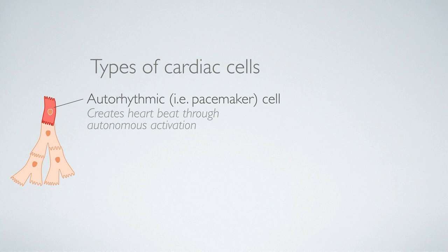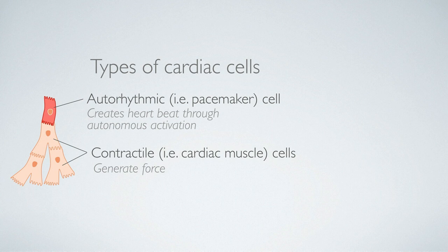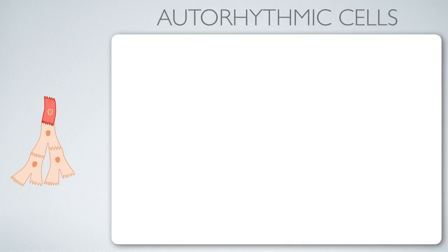The action potentials generated by the auto-rhythmic cells then propagate through the contractile cells, which, in addition to propagating the action potentials through other contractile cells, generate force. So when we talk about cardiac muscle, we're referring to these contractile cells or myocardial contractile cells. We're going to start with the auto-rhythmic cells, performing a virtual experiment where we monitor the membrane potential of an auto-rhythmic cell and look at how that membrane changes over time.